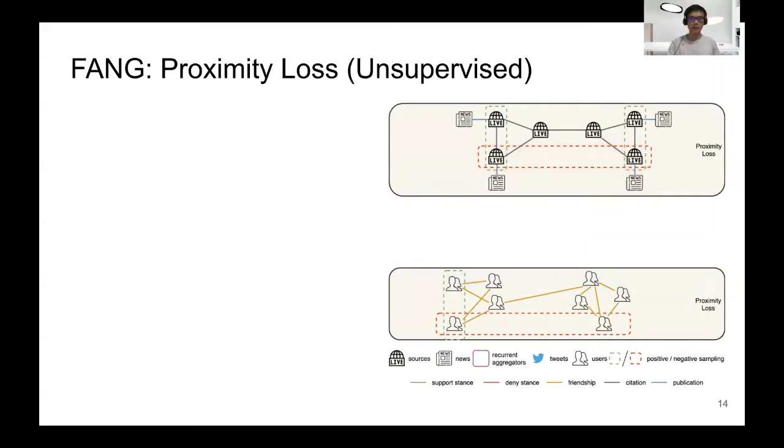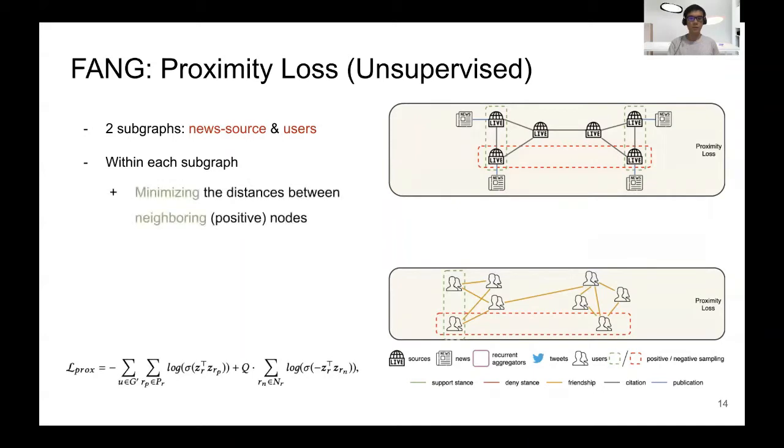In the first loss, the proximity loss, we divide the graph into two subgraphs of news sources and users. Within each subgraph, we minimize distance between neighboring or positive nodes, while maximizing distance between remote or negative nodes.